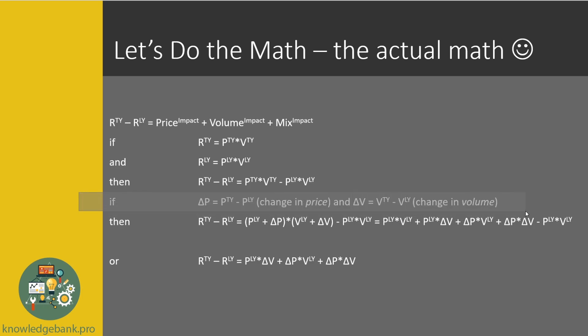Now we introduce delta P — change in price — which is price this year minus price last year. And delta V — change in volume — which is volume this year minus volume last year. If I know my price last year, I can add the change in price to get my price this year. What I've done is take that line and rewrite it so that instead of using price this year, I'm using last year values everywhere plus delta: price this year = price last year + delta P; volume this year = volume last year + delta V. And I'm deducting the same as before.